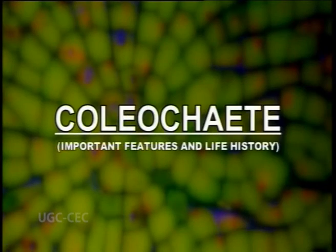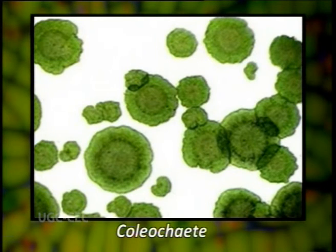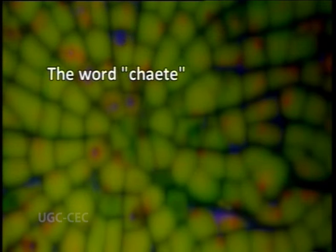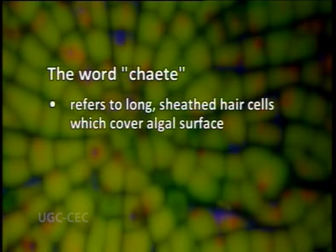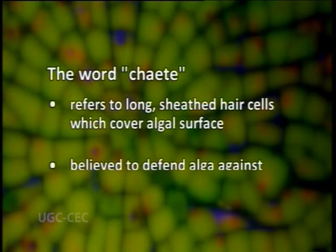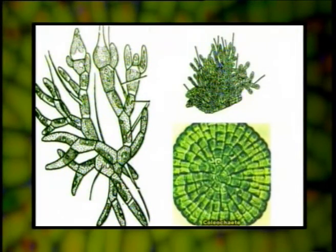Welcome, dear students. Our today's topic is Coleochaete, its important features and life history. Coleochaete is the most commonly found genus of the order Coleochaetales. The name of the genus refers to long sheathed hair cells which cover the algal surface and are believed to defend the alga against potential herbivores.